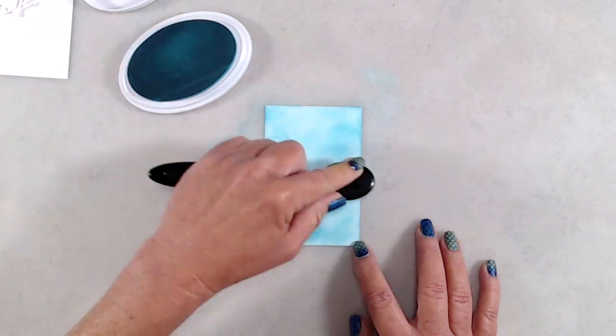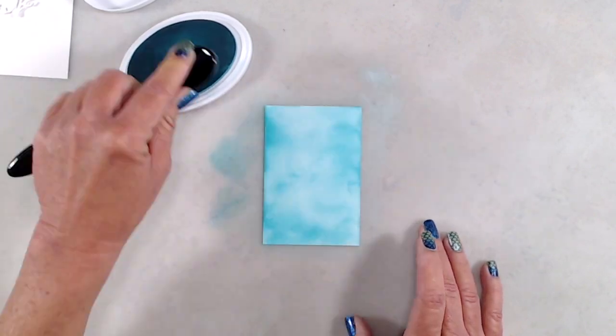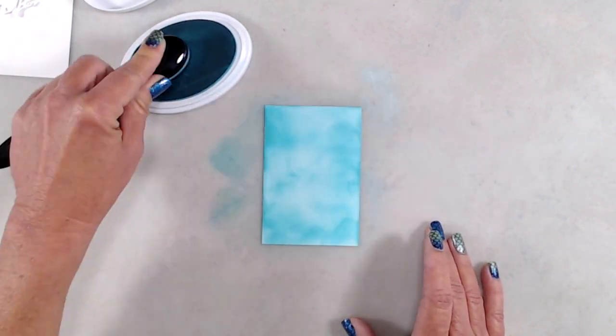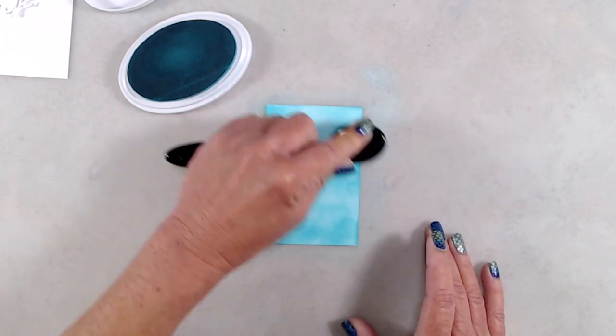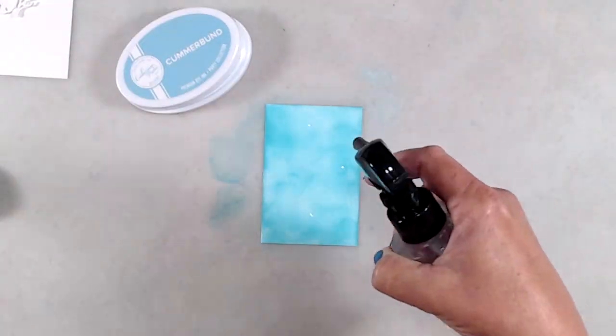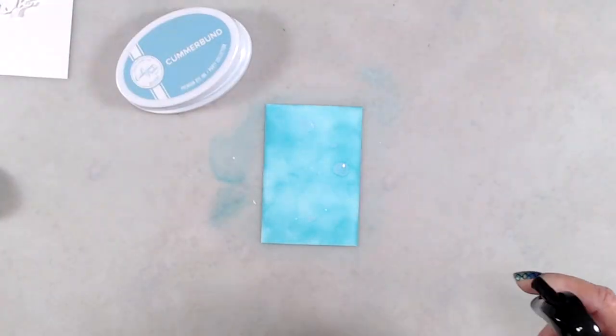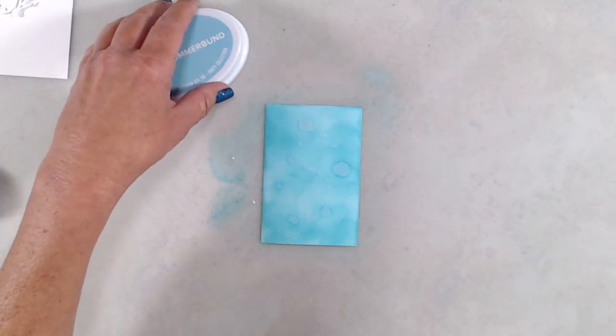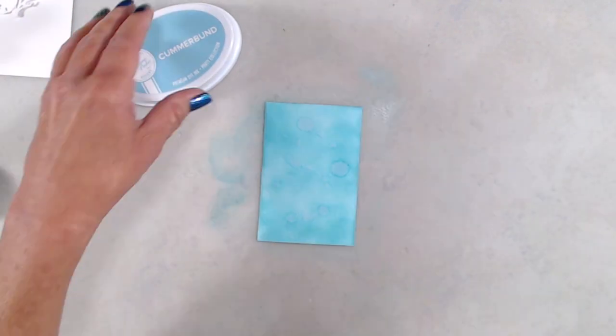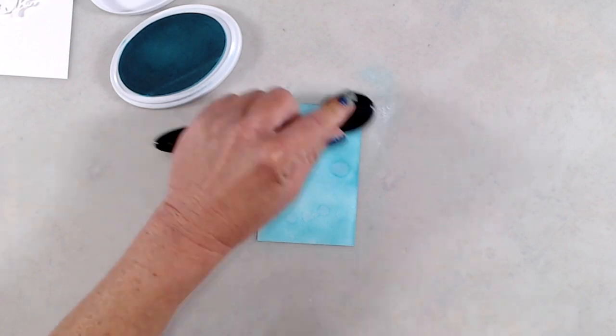I wasn't too worried about getting a perfect blend because after I added a little bit of ink, I grabbed my water bottle and just spritzed a few water droplets here and there. I blotted up the excess water, added a little bit more ink, and then spritzed it again and set that piece off to the side to dry.